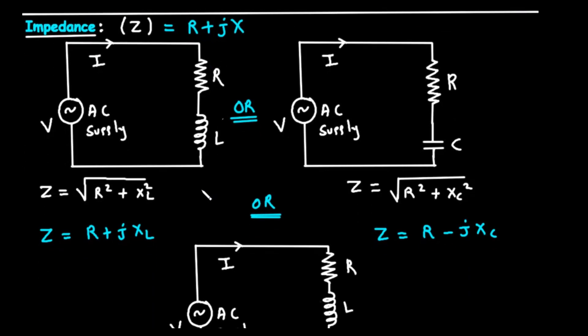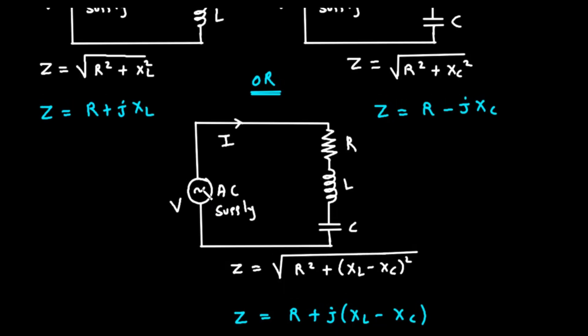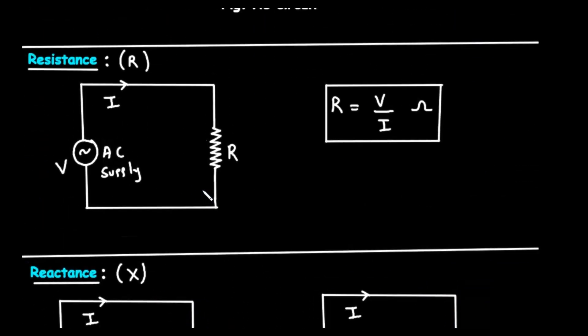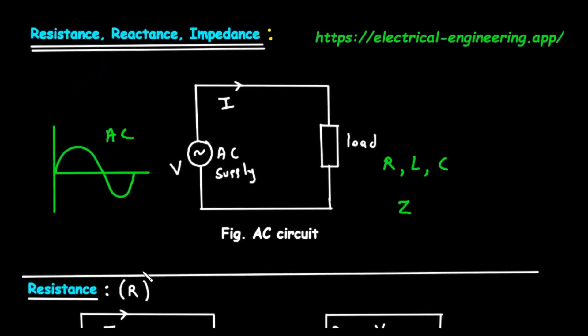the complete picture of opposition in an AC circuit, combining resistance and reactance into a single, comprehensive value. Understanding these three concepts is the key to analyzing and designing all alternating current systems.